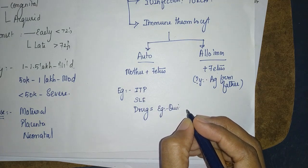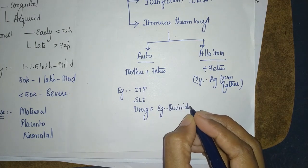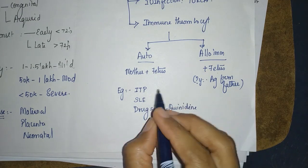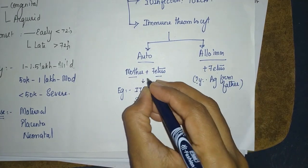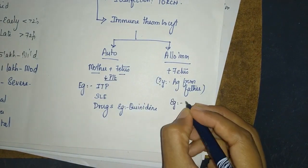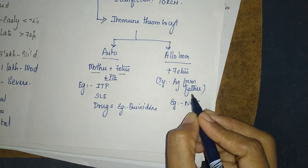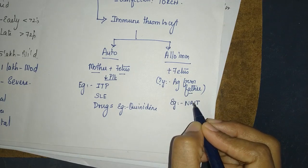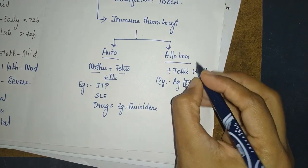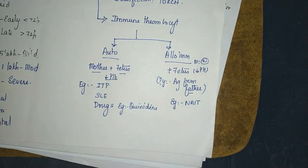What are the types of autoimmune thrombocytopenia? Suppose the mother has immune-mediated thrombocytopenic purpura, or she has SLE that develops antibodies, or she takes some drugs like quinidine — that can cause drug-induced thrombocytopenia, producing antibodies that cross and affect the child. In autoimmune cases, both mother and fetus will have low platelet counts. The classical alloimmune example is neonatal alloimmune thrombocytopenia — antibodies against the paternal antigen on platelets. Here, only the fetus will have low platelets; mother's platelet count will be normal.